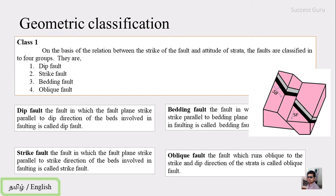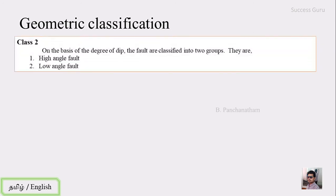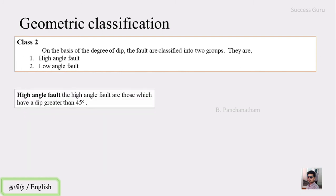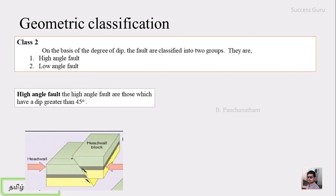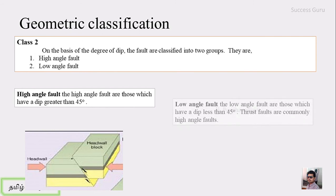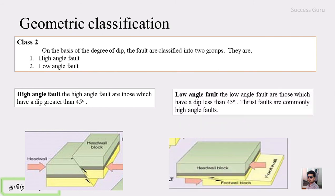The second geometric classification is based on the degree of dip of the fault plane. There are two types: high angle fault and low angle fault. The high angle fault is one where the fault plane dips greater than 45 degrees. If the dip is less than 45 degrees, it is called a low angle fault. In general, low angle faults form at less than 45 degrees.